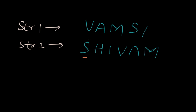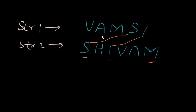Starting from S in SHIVAM: S doesn't match V, A, or M, but S matches S in VAMSI. H is not present in VAMSI, so we proceed to I — I matches in VAMSI. Next, A is present in VAMSI but it occurs before S, so this would cross the lines, meaning the order is not maintained. Similarly, M also occurs before S and I, so the sequence is not maintained. So we only got two characters for this subsequence: S and I.